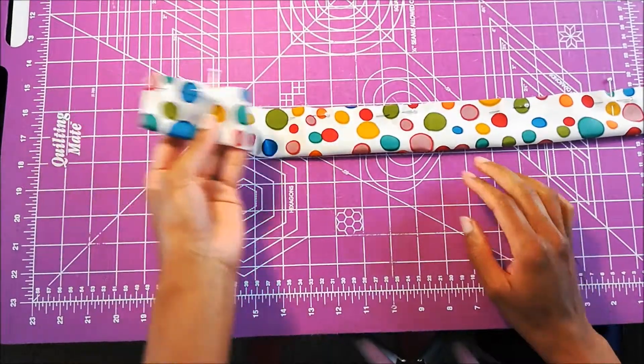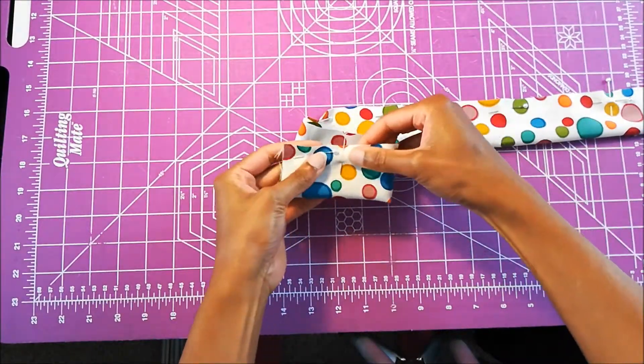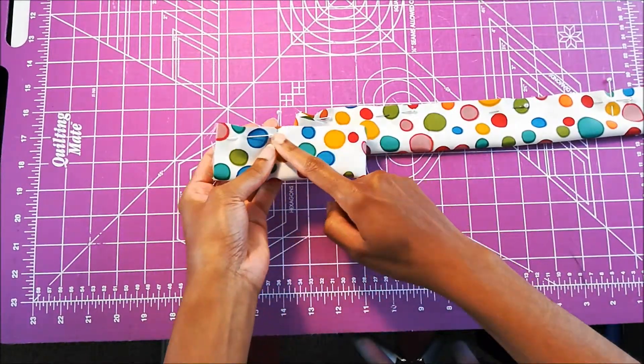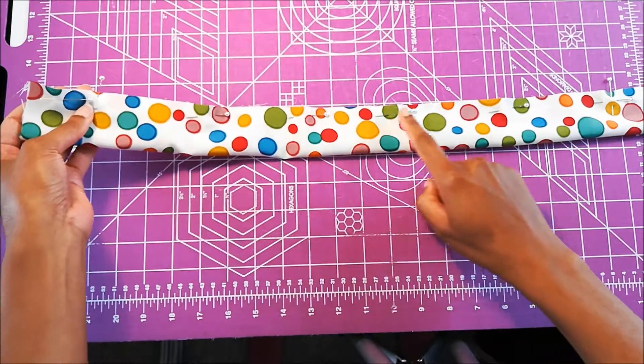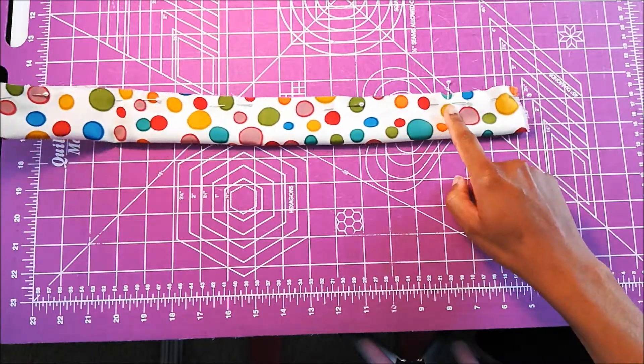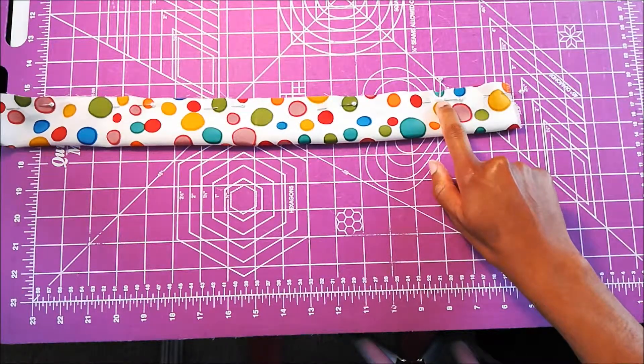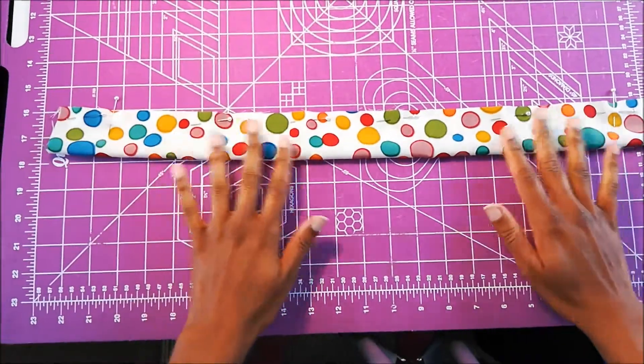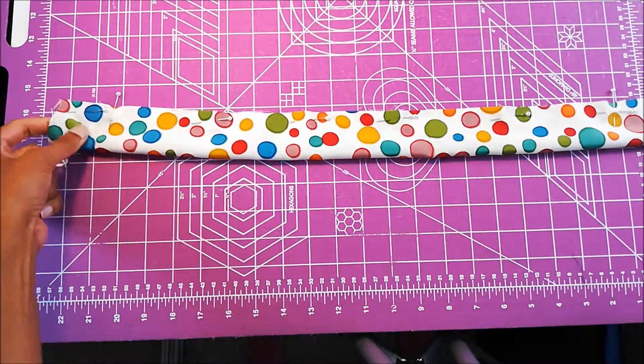And what I'm going to do is I'm actually going to baste from the end to this point. And then I'm going to stitch all the way across. And then when I get to this point, I'm going to baste from here to the end. And that is because of how I'm going to finish the scrunchie.